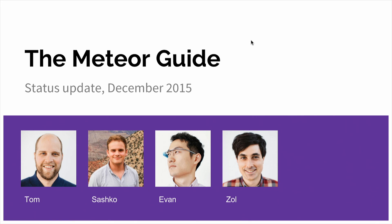I definitely want to highlight some of the awesome people that we've been working with on this project. Tom is my partner here — he's one of the authors of Discover Meteor, which is one of the best resources to get started with Meteor, and now he's helping me build the Meteor Guide. Also, Evan has been helping us with the website, and Zoll is helping us get organized. It's definitely a great collaboration between a lot of cool people.